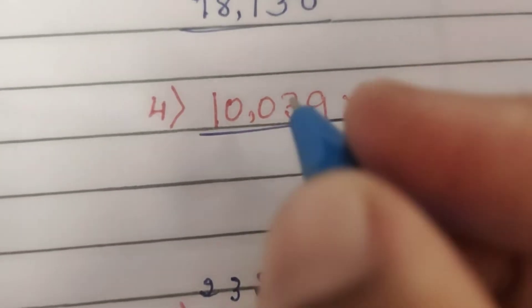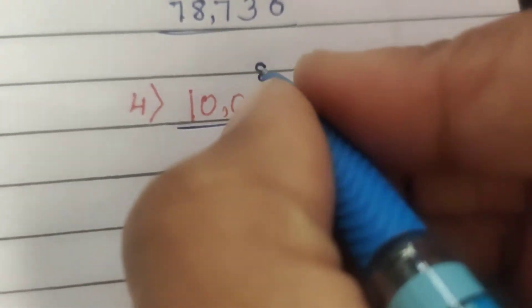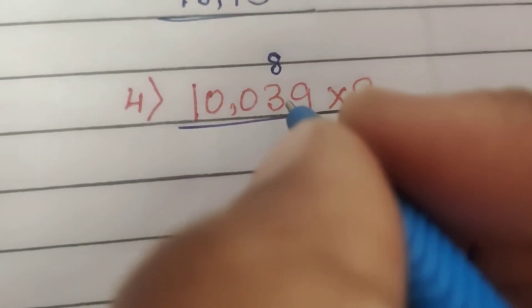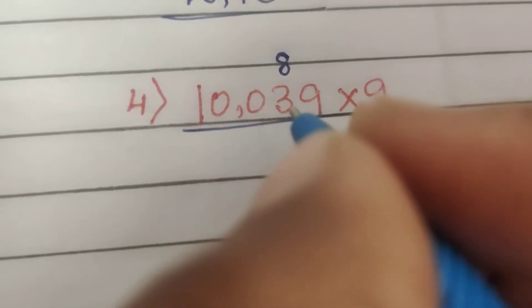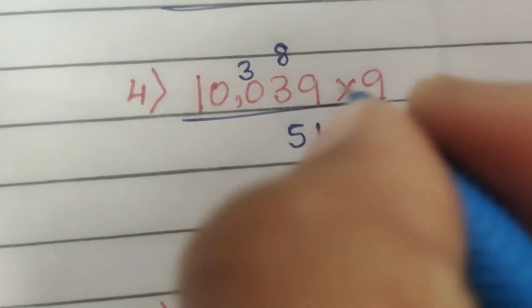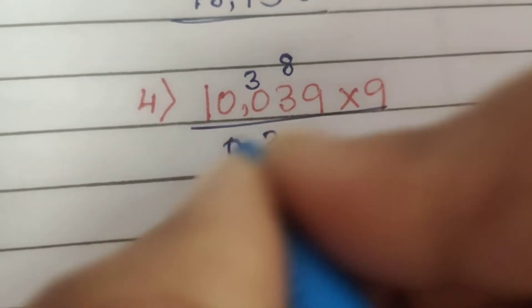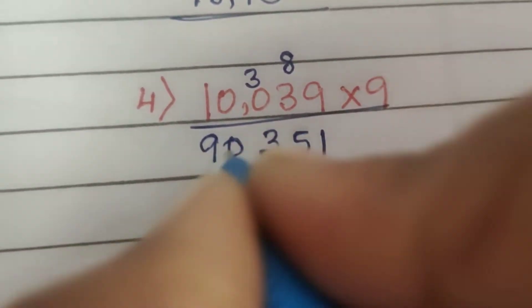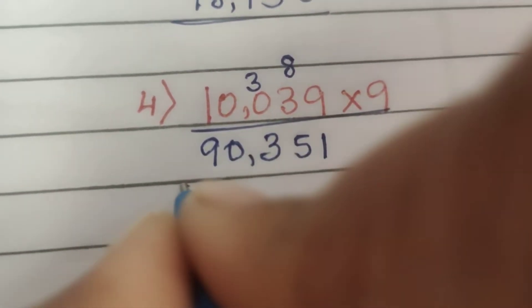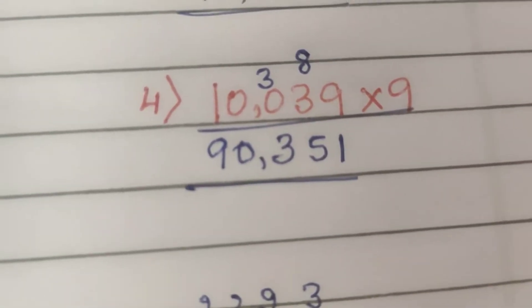4th one: 9 nines are 81, so write 1 and carry 8. 9 threes are 27, 27 plus 8 is 35, so write 5 and carry 3. 9 zeros are 0, 0 plus 3 is 3. 9 zeros are 0. 9 ones are 9. So the answer is 90,351.